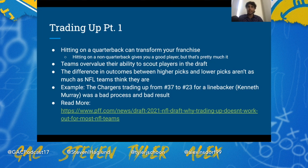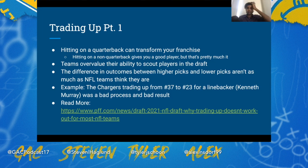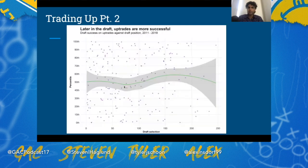Moving up from pick 17 to pick 12 isn't that big of a difference. Trading up from 37 to 23 — the gap is not that big — and giving up a second and a third for a first is not the best process, unless you're picking a quarterback. On top of that, taking a linebacker, which is one of the least valuable positions in football and probably the least valuable in Staley's defense, is a bad process. That's why Kenneth Murray is a bad pick. Later in the draft, trading up is a little bit more successful, as you can see in this graph.